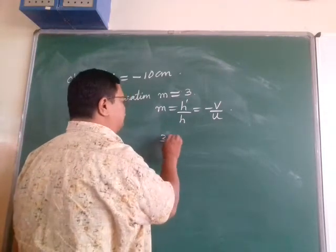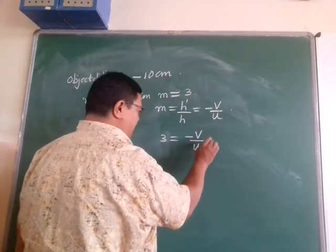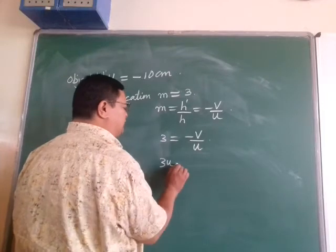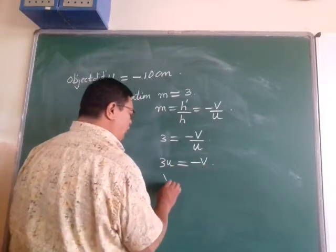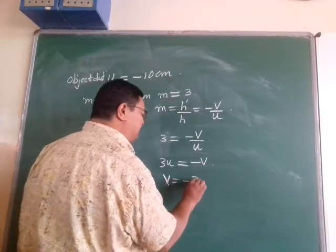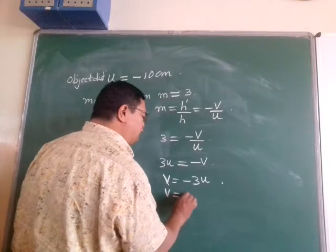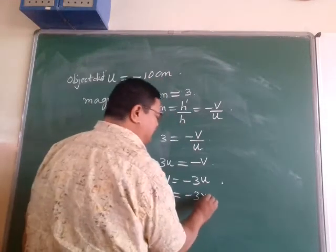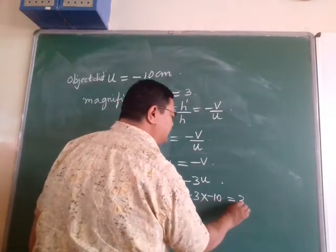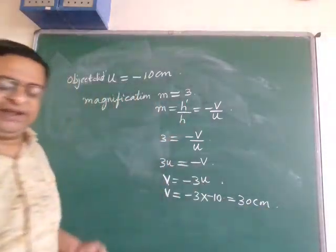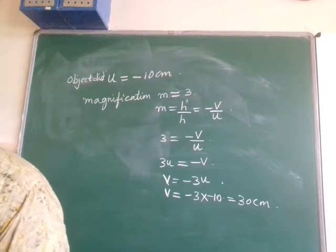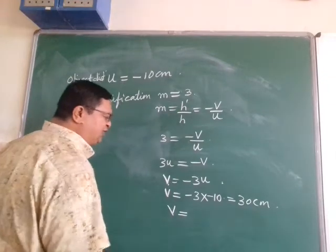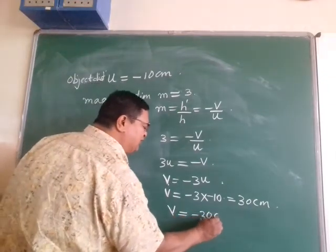So 3 equals minus v by u. Cross-multiplying gives 3u equals minus v, or v equals minus 3 times u. Since u is minus 10, v equals minus 3 times minus 10, which gives 30 centimeters. But since it is a real image, it is formed to the left of the mirror, so v equals minus 30 centimeters.